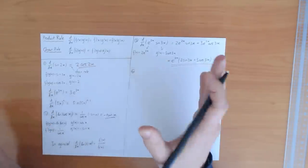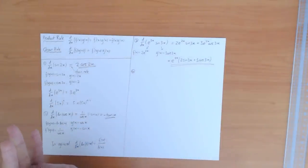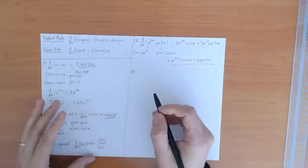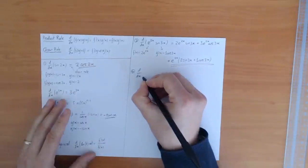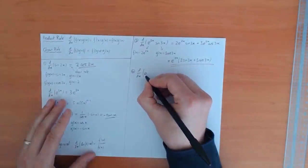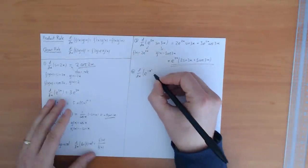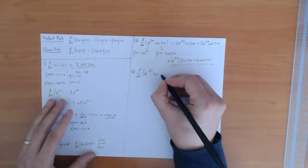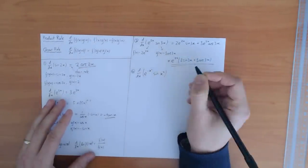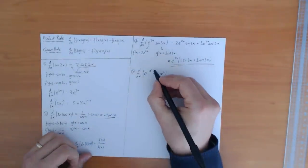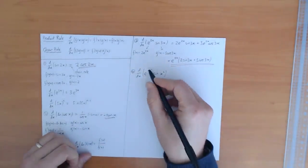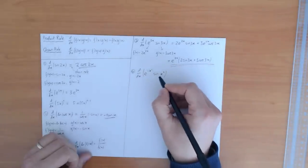For the fourth example I'm going to combine these two rules. I'll give you an example where you need to use the chain rule and the product rule together. Suppose I want to compute the derivative of e to the minus x squared times sine of x squared. If I separate these two functions, each of them requires the chain rule.